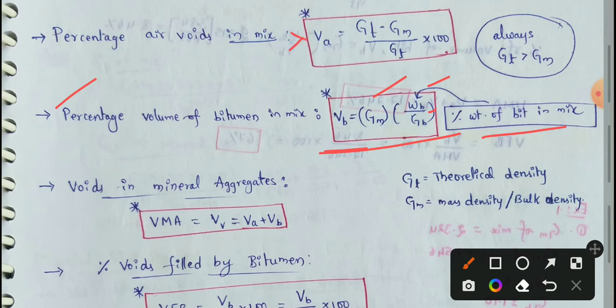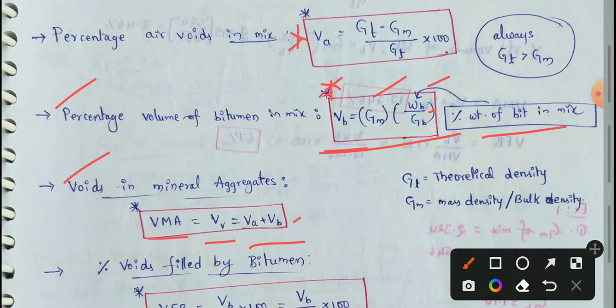Next: voids in mineral aggregate, VMA. The volume of voids (Vv) equals Va (volume of air) plus Vb (volume of bitumen). Then VFB (voids filled with bitumen) equals Vb divided by Vv — that is, volume of bitumen divided by volume of voids.